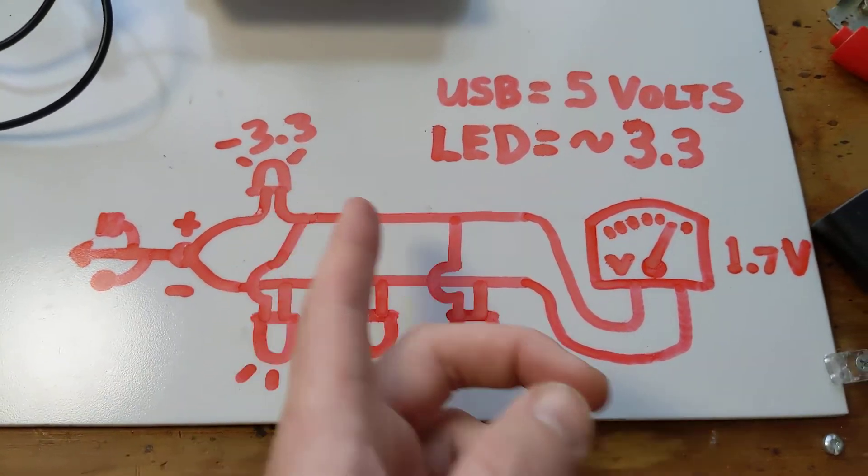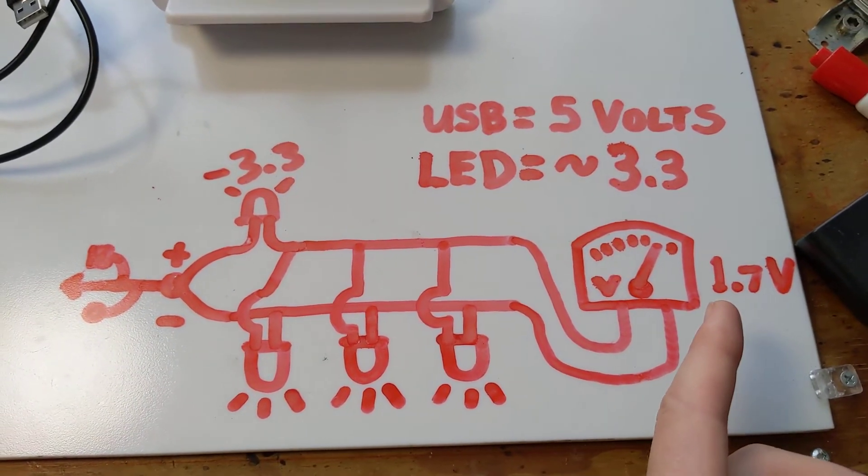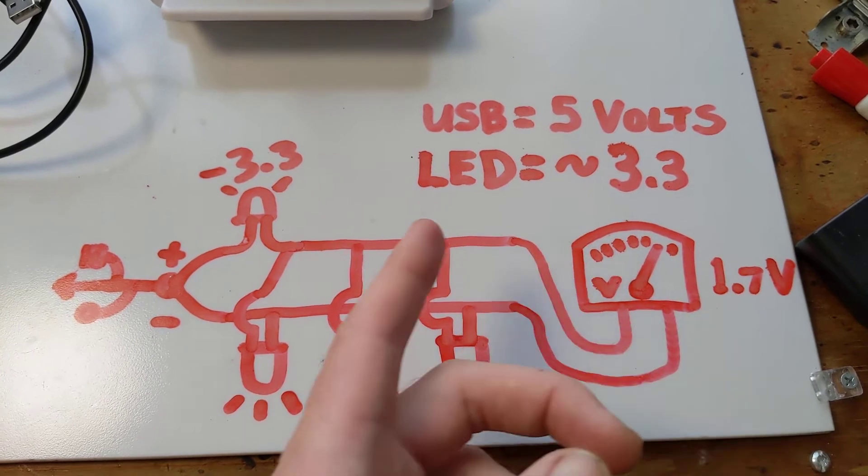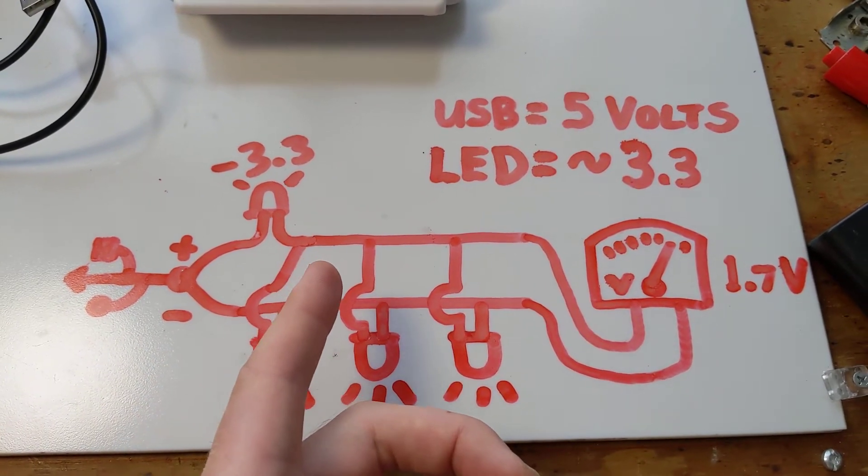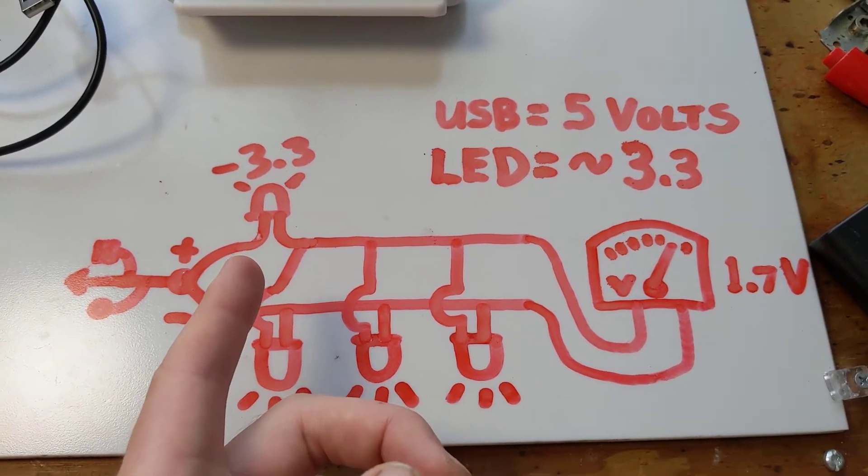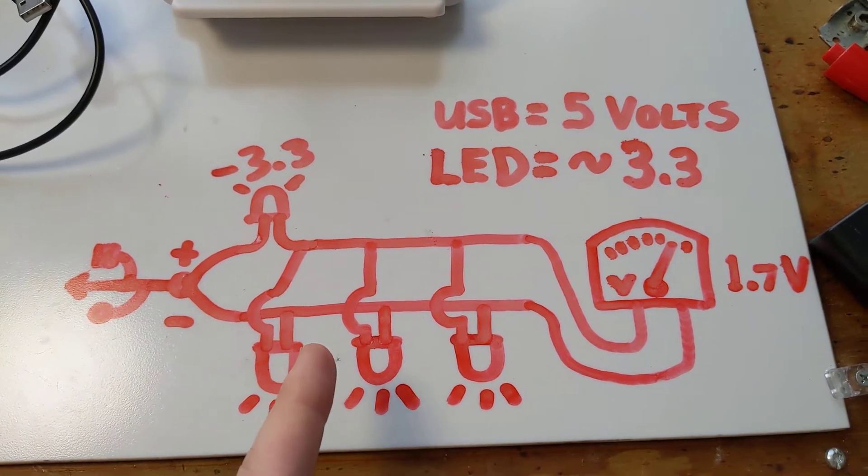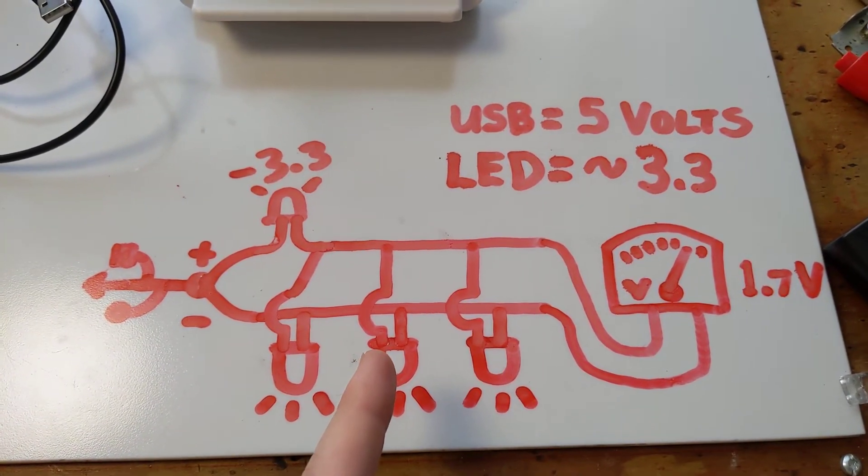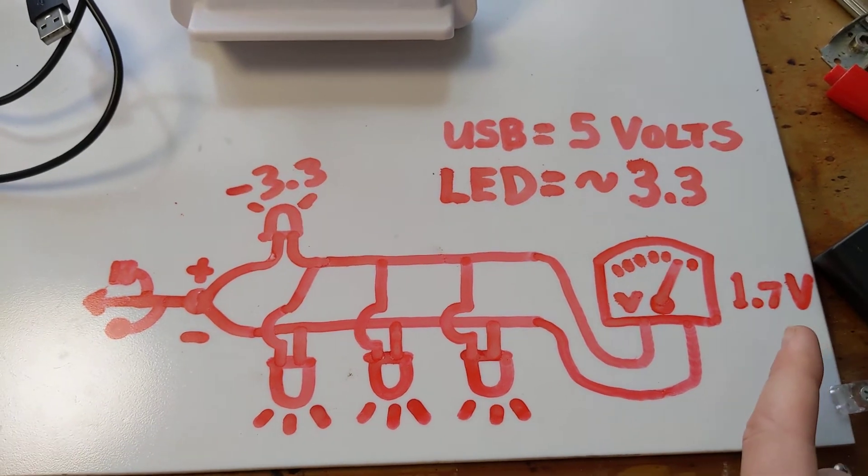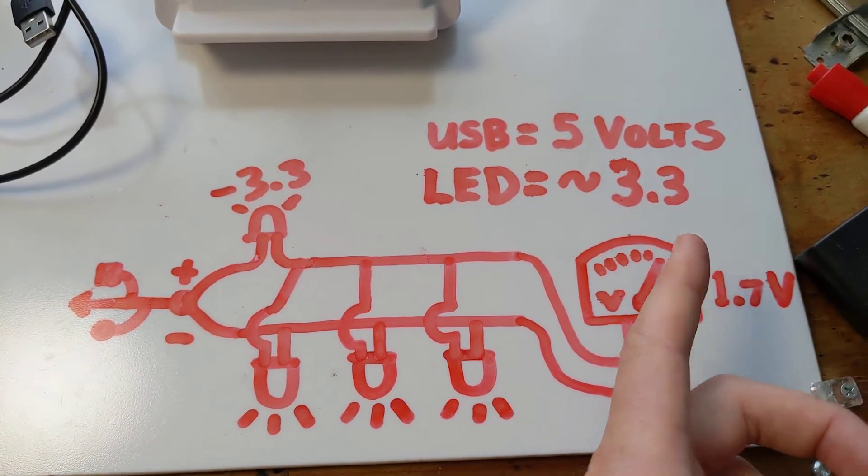which then reduces the voltage from 5 volts to 1.7 volts. Which doesn't sound like a lot, but it's actually plenty to power modern high efficiency LEDs. You think this is almost 2 volts and an LED is just 3.3,